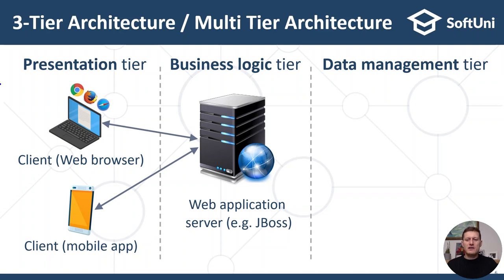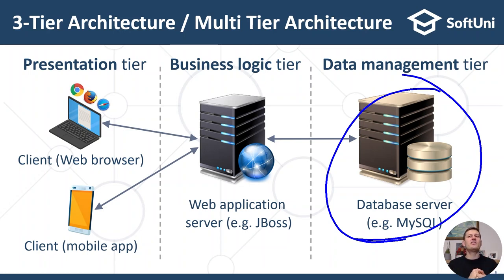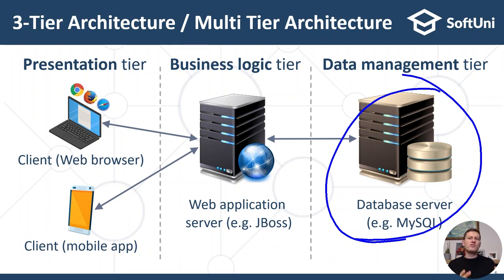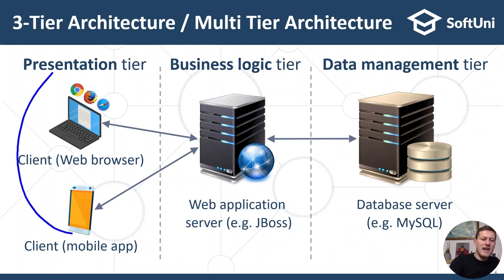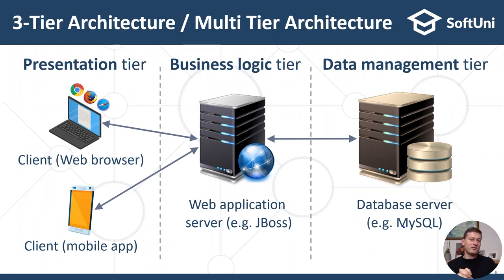The data management tier — also called the database tier — is responsible for data storage. Typically it's a database system such as MySQL, MS SQL Server, or PostgreSQL, or it can be a cloud-based data storage such as Amazon S3, Azure Table Storage, or Google Cloud. The data management tier does not care about the business rules — it just stores and retrieves data: objects, table rows, files, documents, images, videos, and other assets. Structuring the app in these three separate layers — presentation, business, and data management — has many benefits in large enterprise systems. For small systems it's not necessary, but for big enterprise systems it simplifies manageability because different development or IT teams can implement different tiers.